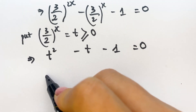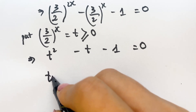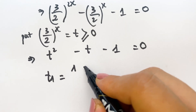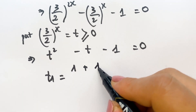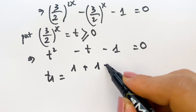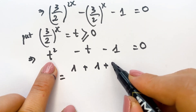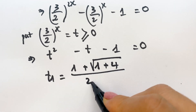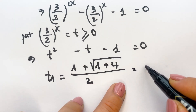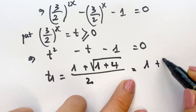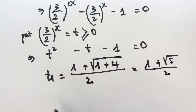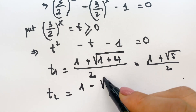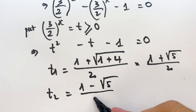So you have to find 2 values of t. Firstly, using the quadratic formula: t1 equals negative b plus square root of b squared plus 4ac, over 2. So it equals 1 plus square root of 5, over 2. And so we have t2 equals 1 minus square root of 5, over 2.